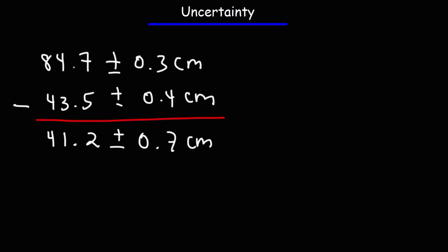You might be wondering why we add the uncertainties when this is a subtraction problem. The short answer is that whenever you're dealing with operations with uncertainties — whether you add, subtract, multiply, or divide — the uncertainty of the new result is actually greater than the individual uncertainties. The effect compounds with mathematical operations.